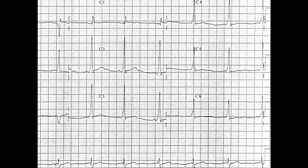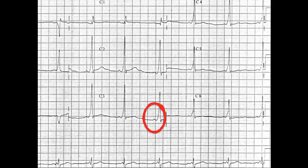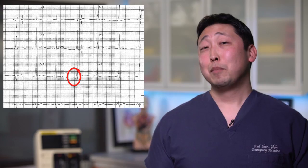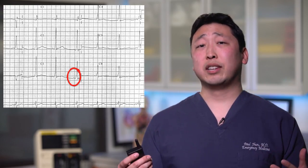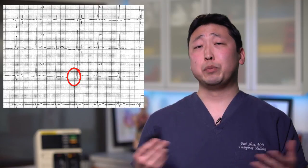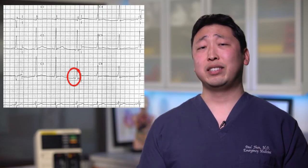Do you see the abnormality? Do you see the shortened PR interval and the slurring upstroke into the QRS complex? That's right, that's called the delta wave and that is suggestive of Wolff-Parkinson-White syndrome, or WPW syndrome. But besides that, there's a whole laundry list of red flags that we should be looking for on the ECG.